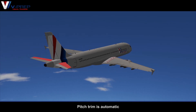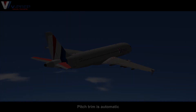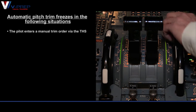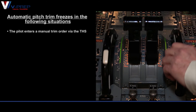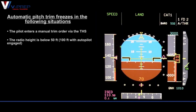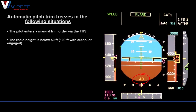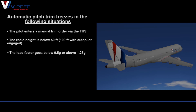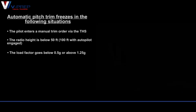Pitch trim is automatic. Automatic pitch trim freezes in the following situations: the pilot enters a manual trim order via the THS; the radio height is below 50 feet, or 100 feet with autopilot engaged; the load factor goes below 0.5G or above 1.25G.